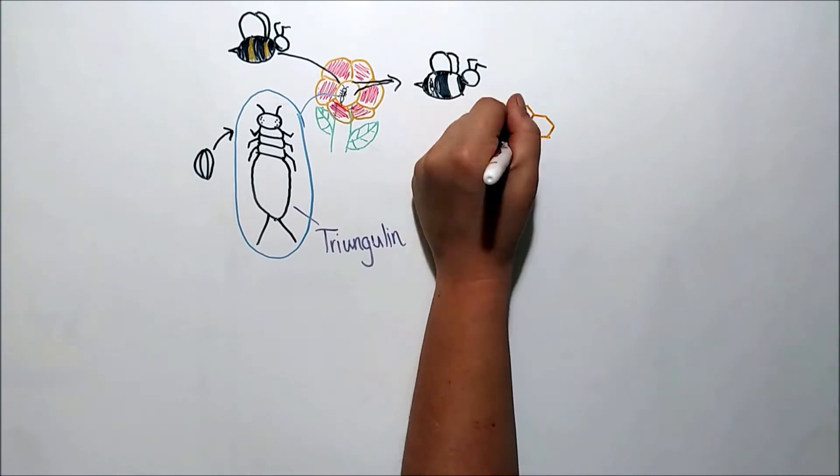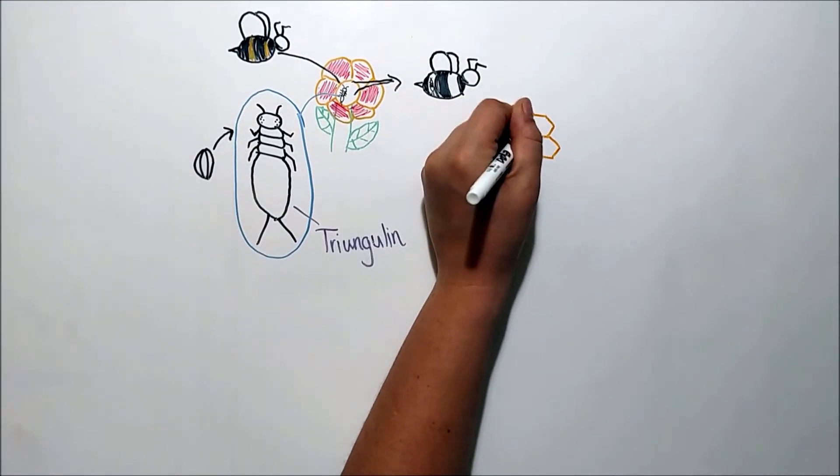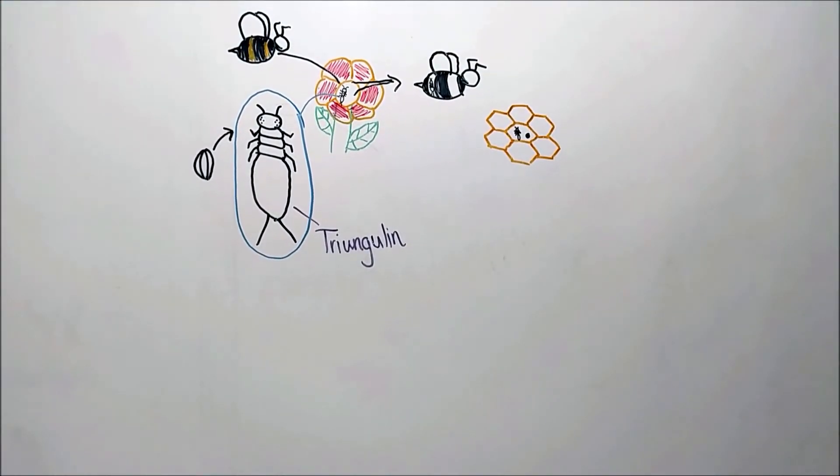The bee will eventually travel back to its hive, where the Triungulin larvae will let go of the bee and crawl into the comb. There, it will feed on the bee grubs and eggs.